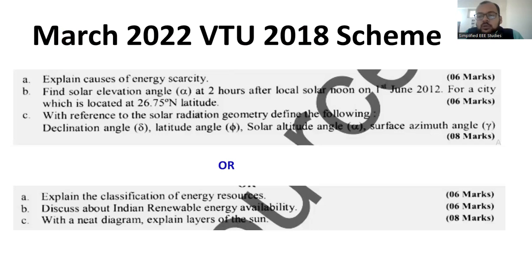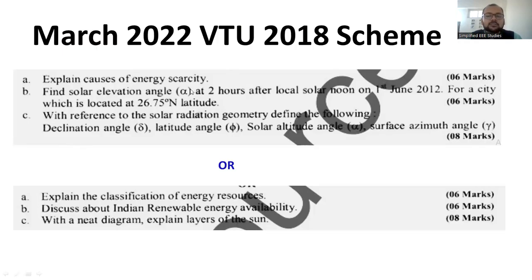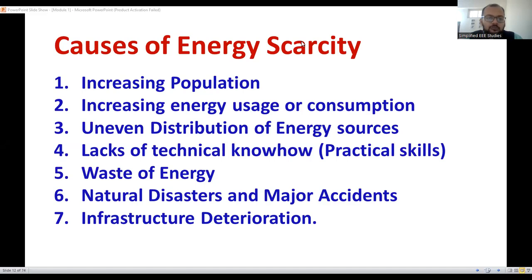I have collected three to four question papers and sorted the most important questions which can be expected in the forthcoming examination. The first question — taken from the 2022 VTU 2018 scheme — is: explain the causes of energy scarcity. The weightage is six marks, and at least you have to write a minimum of one page by including all the points.